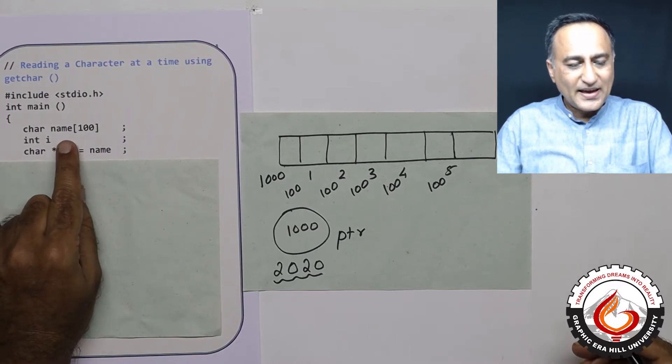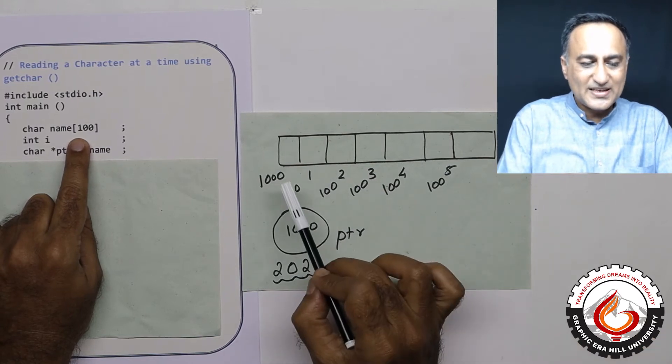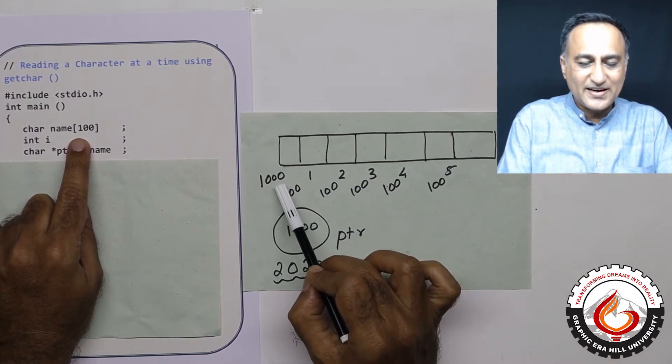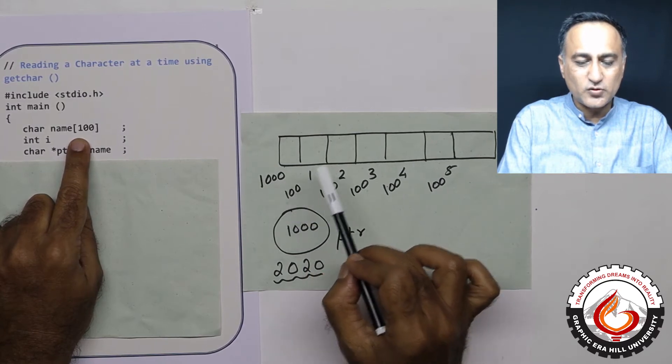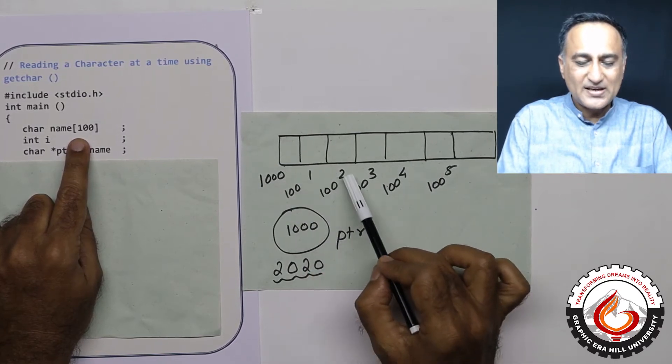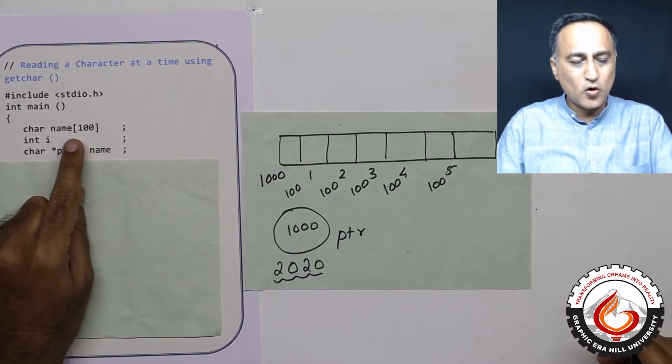I have defined an array name of type character width 100. Let's say the character name array starts at address 1000. The 0th location is at 1000, first is at 1001, second is at 1002, third is at 1003, fourth is at 1004, and so on.